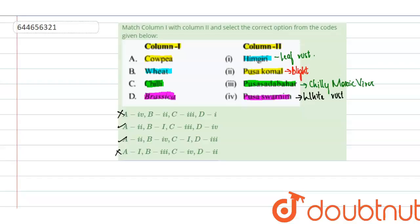C, chili, is matched to 3. Yes, we can see that in the second option. And D is matched to 4, Pusaswarnim, and yes, it is also given in the second option. The answer for this match the following type of question is the second option.